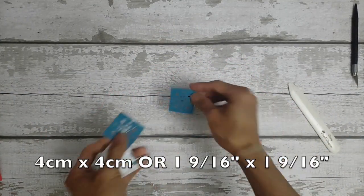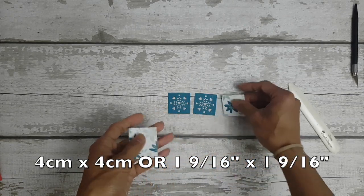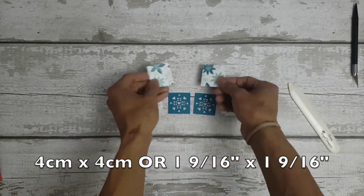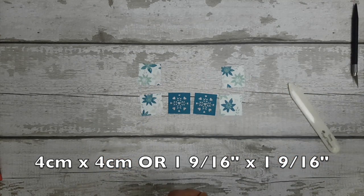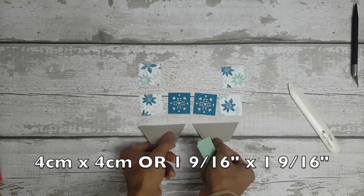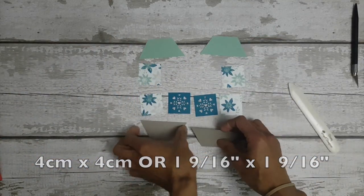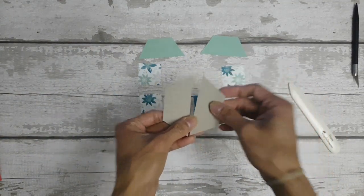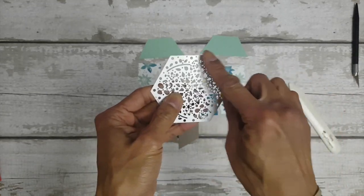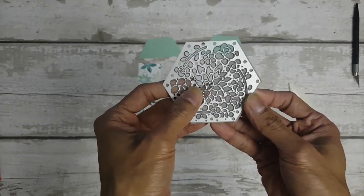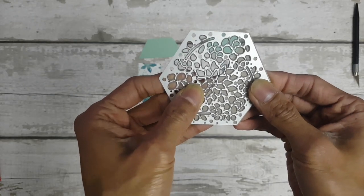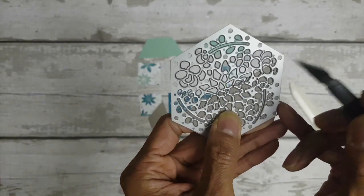So for the decorations I've gone ahead and cut Island Indigo with the heart design from the window box thinlits dies and cut four of the Blooms and Bliss design series paper, use Tip Top Taupe for the base and for the top Mint Macaron.